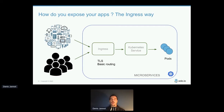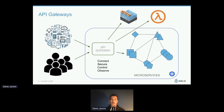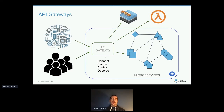The typical way to expose apps is to use an ingress controller like HAProxy or NGINX. That does the job when you start, but very quickly you find you need more — you want to expose Kubernetes apps, legacy applications on VMware, functions running in Lambda, and do things like authentication at the gateway level rather than managing it application by application.